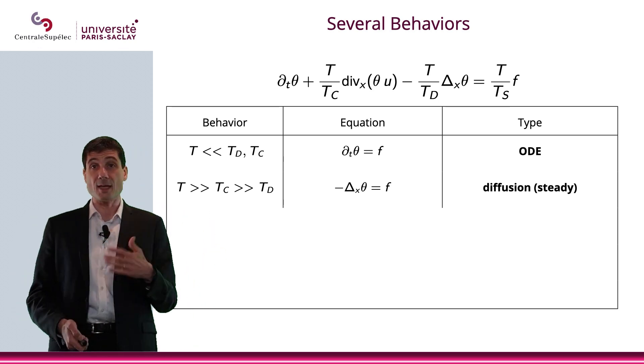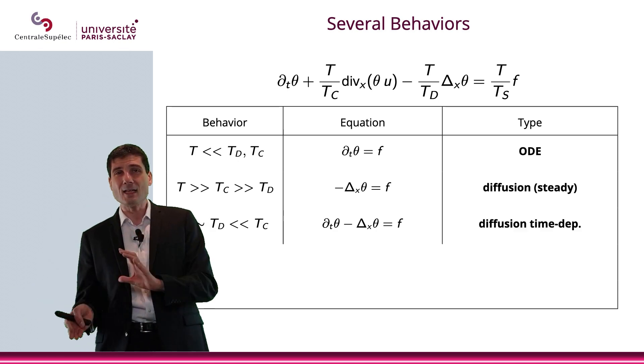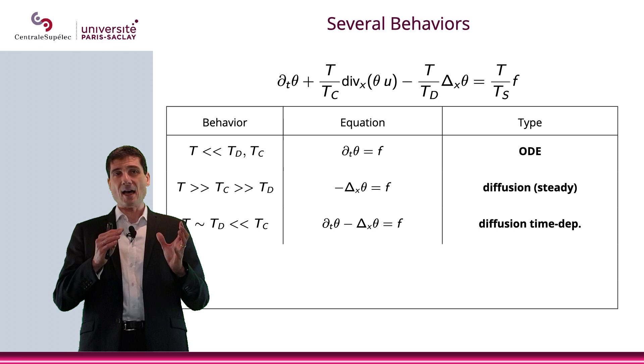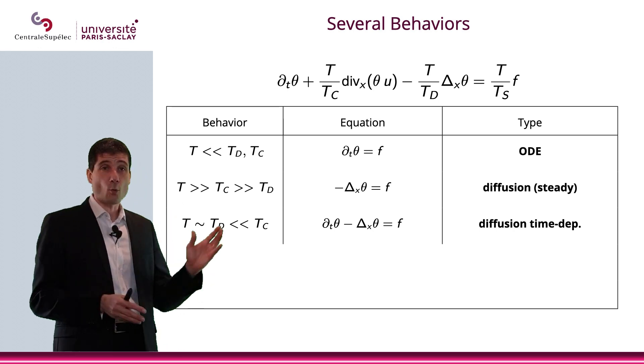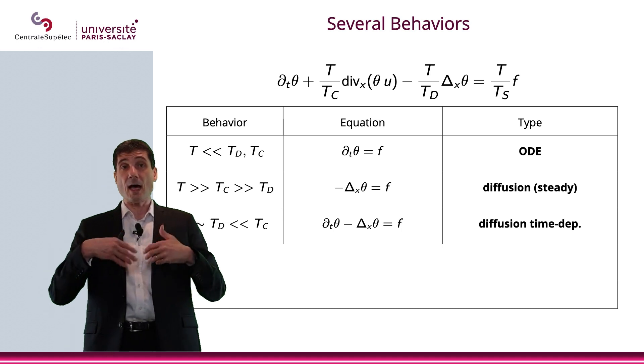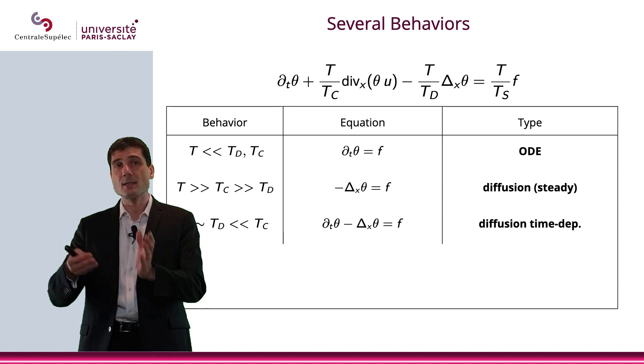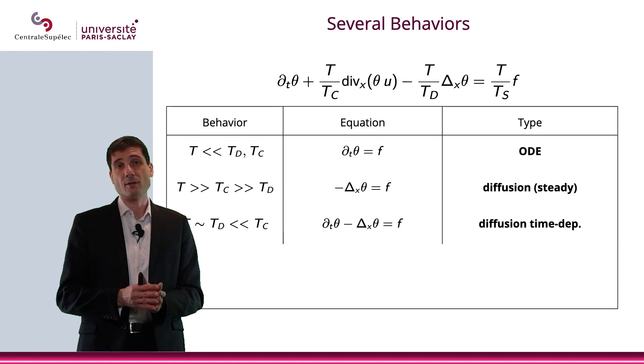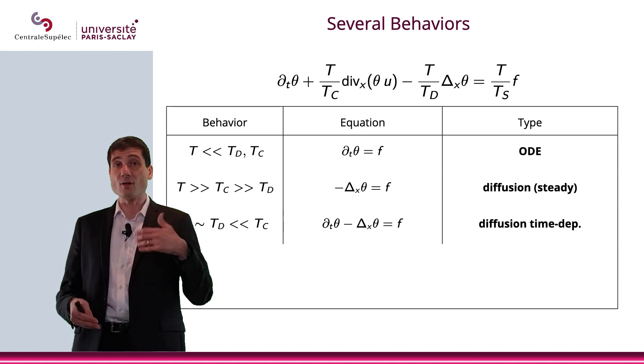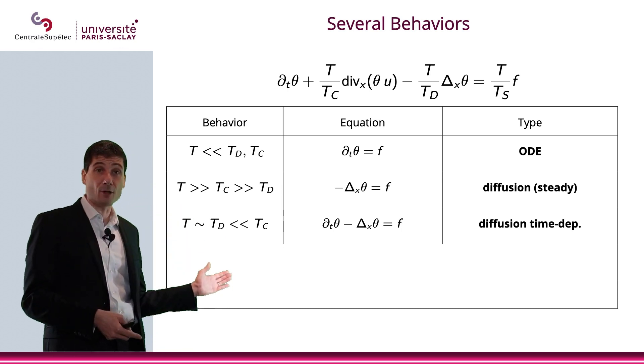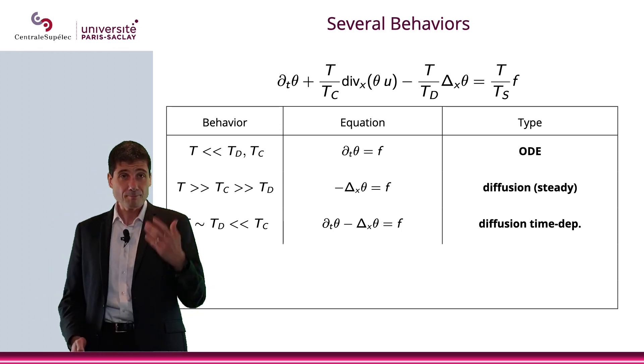Then we could say, what if T is about the same as Td, and that's really small compared to Tc. In this case, what you end up with is a parabolic equation, which is the time derivative of θ minus the Laplace operator θ equals f. That is a diffusion time dependent. So you see, this one is parabolic, while the one before was actually elliptic.